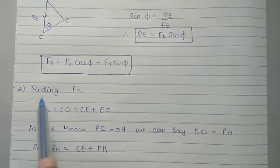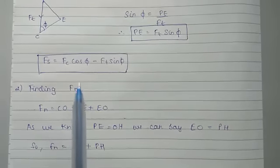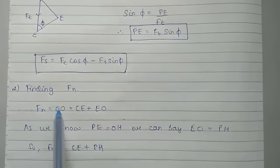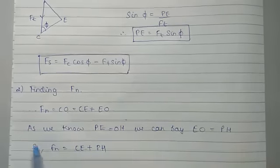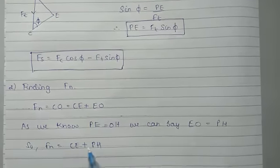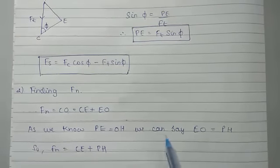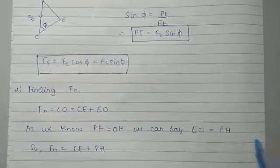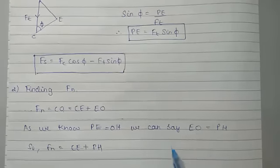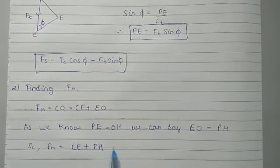The second step is to find FN, the normal compressive force. We know FN is equal to CO from the diagram. So we can write C is equal to EO. As PE is equal to OH, we can say E is equal to PH from the Merchant Circle Diagram. So FN is equal to CE plus PH.